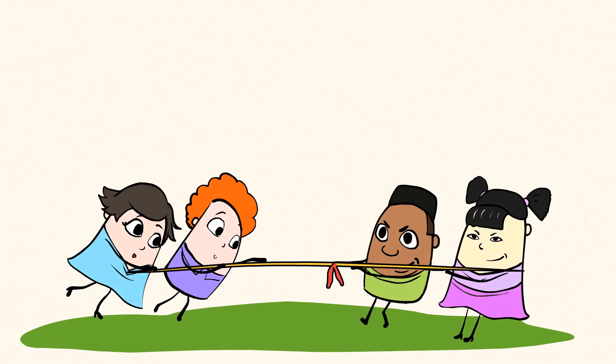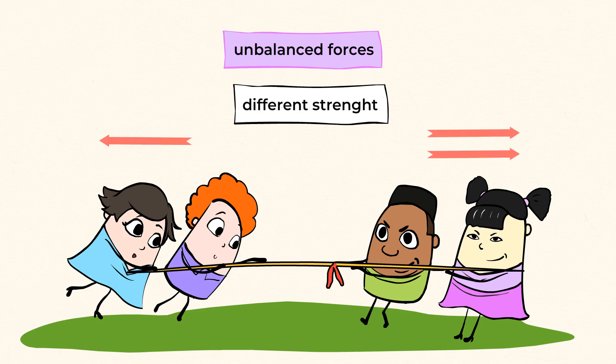Back to our tug-of-war. The moment this flag goes in the direction of one of the teams, the forces applied here become unbalanced. The unbalanced forces have different strengths.